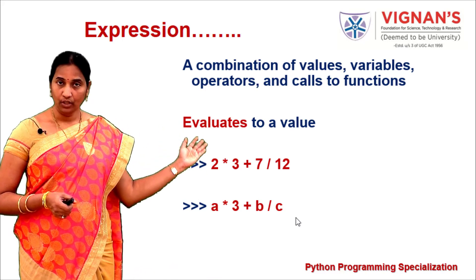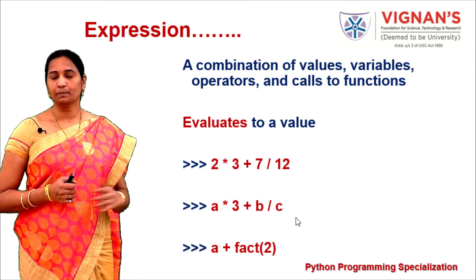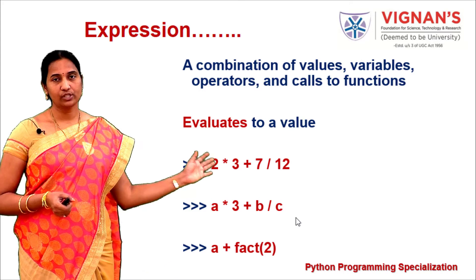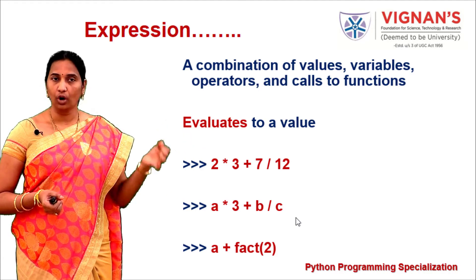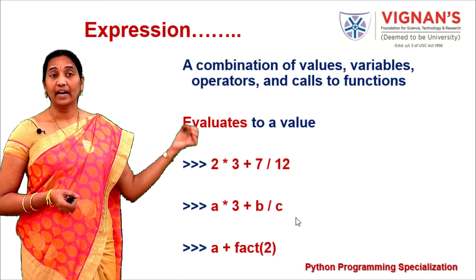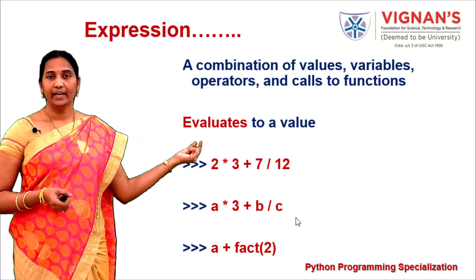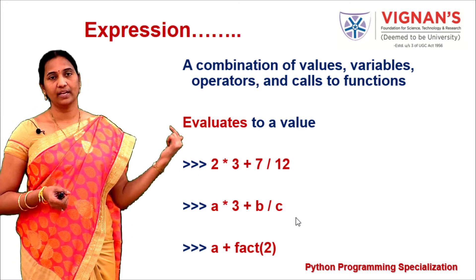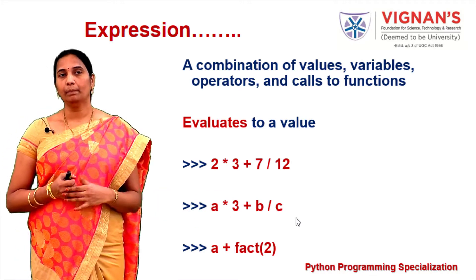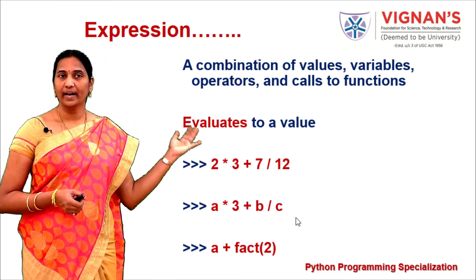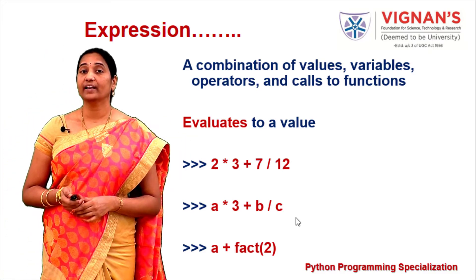Consider an expression which is a combination of variables, operators, and operands. Consider another expression which includes a variable and a function call. When fact(2) is called, whatever is returned by the factorial function will be added to variable a, and that result will be returned by the expression.